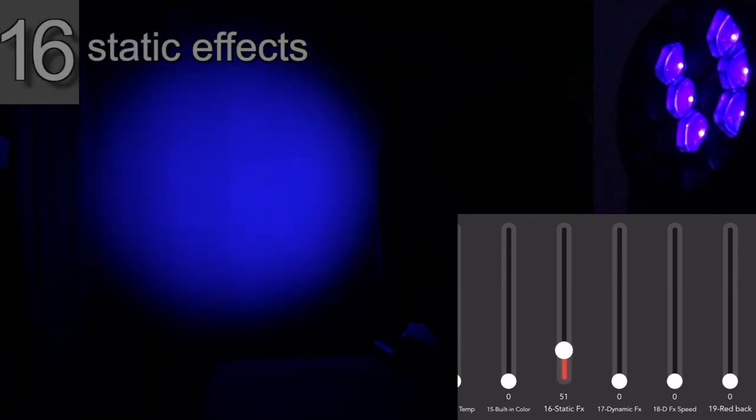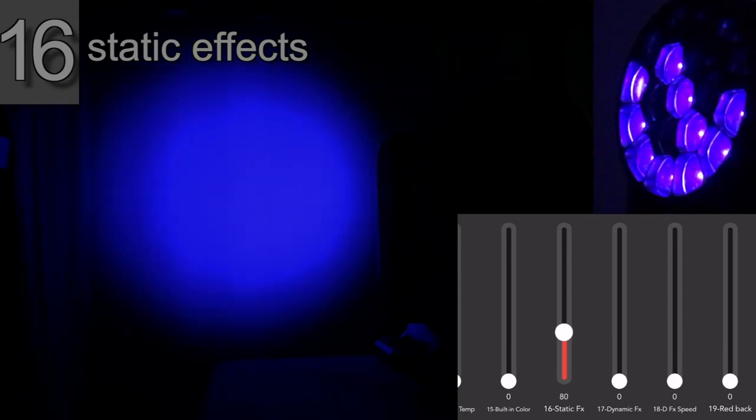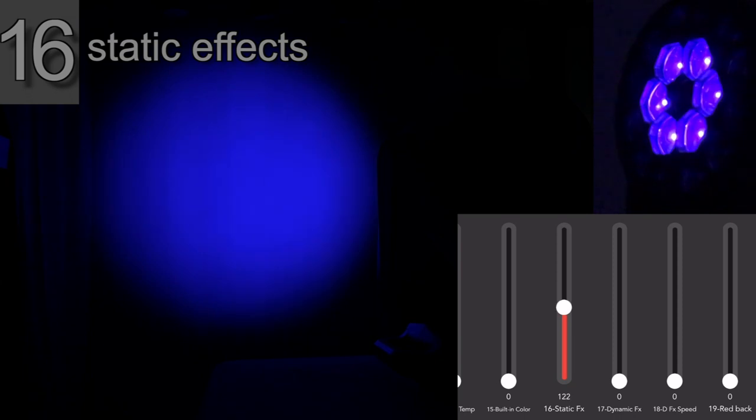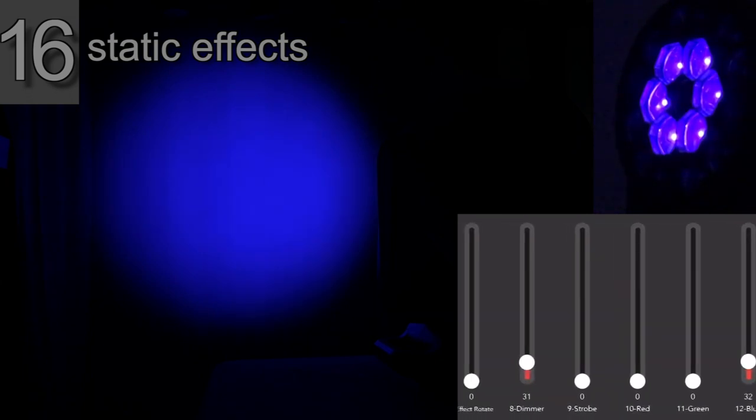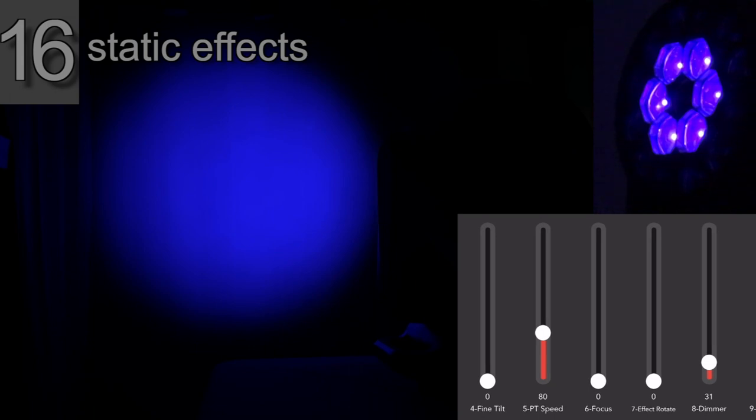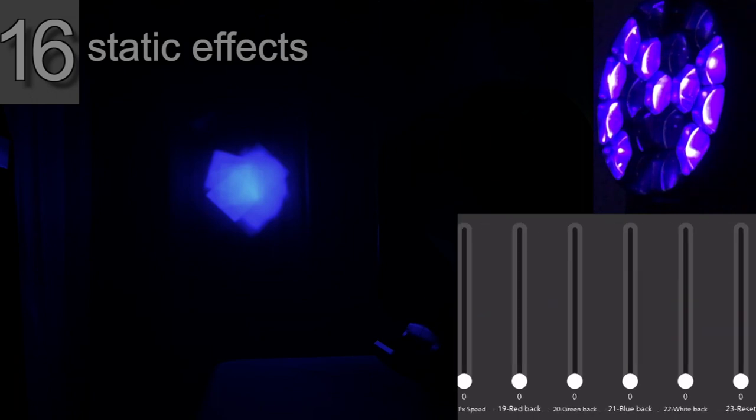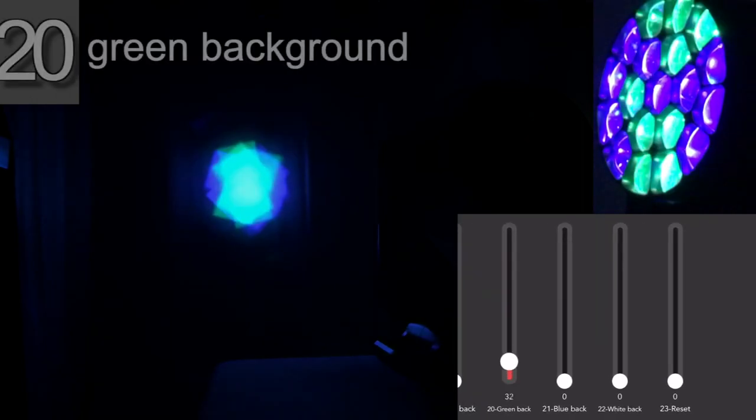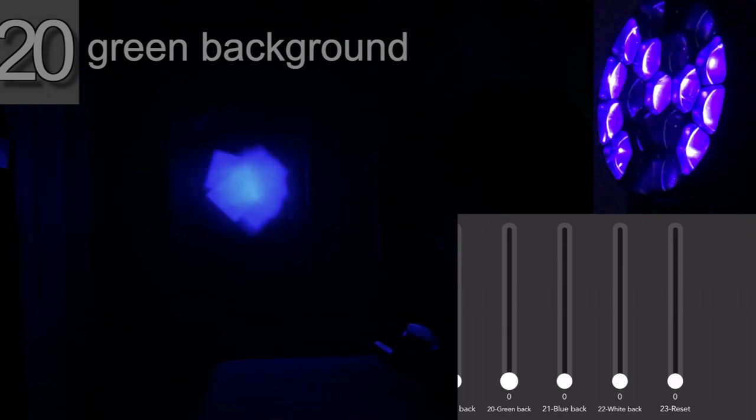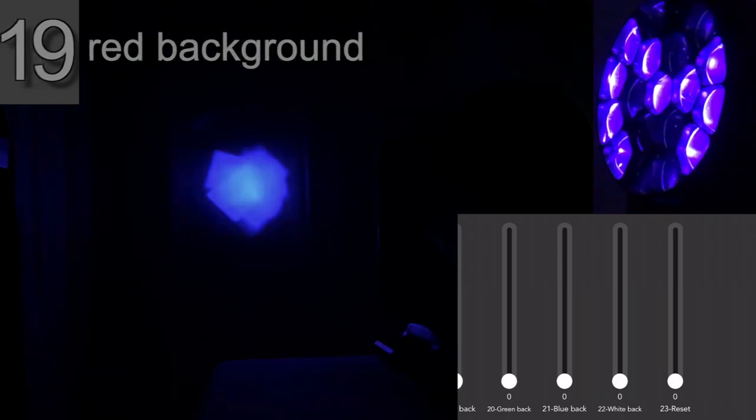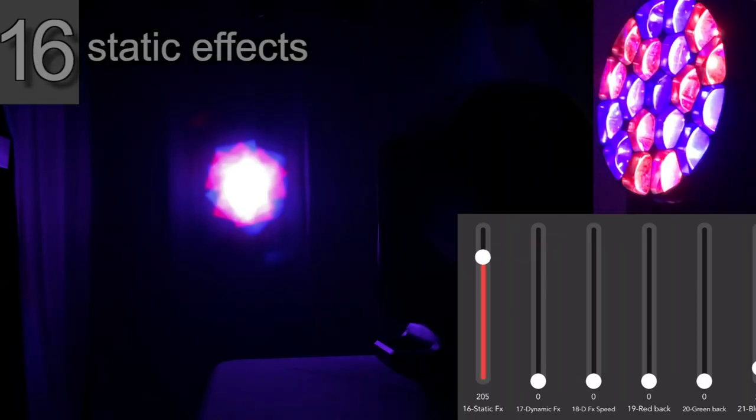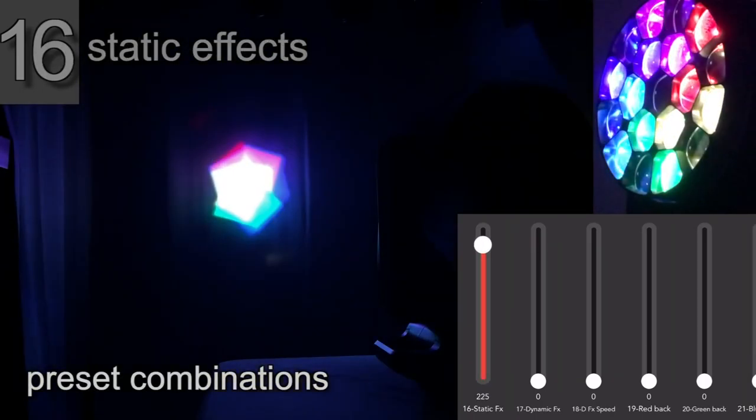So now that we have the blue up as a primary color, let's go to the static effects. When we bring this up you can see this brings in different combinations of illuminated LEDs. You can see better what the effect of that is when we bring the focus back to a beam. These are different combinations of LEDs, and the ones that are not illuminated, you can go to the background colors and bring those up to mix different combinations of colors.